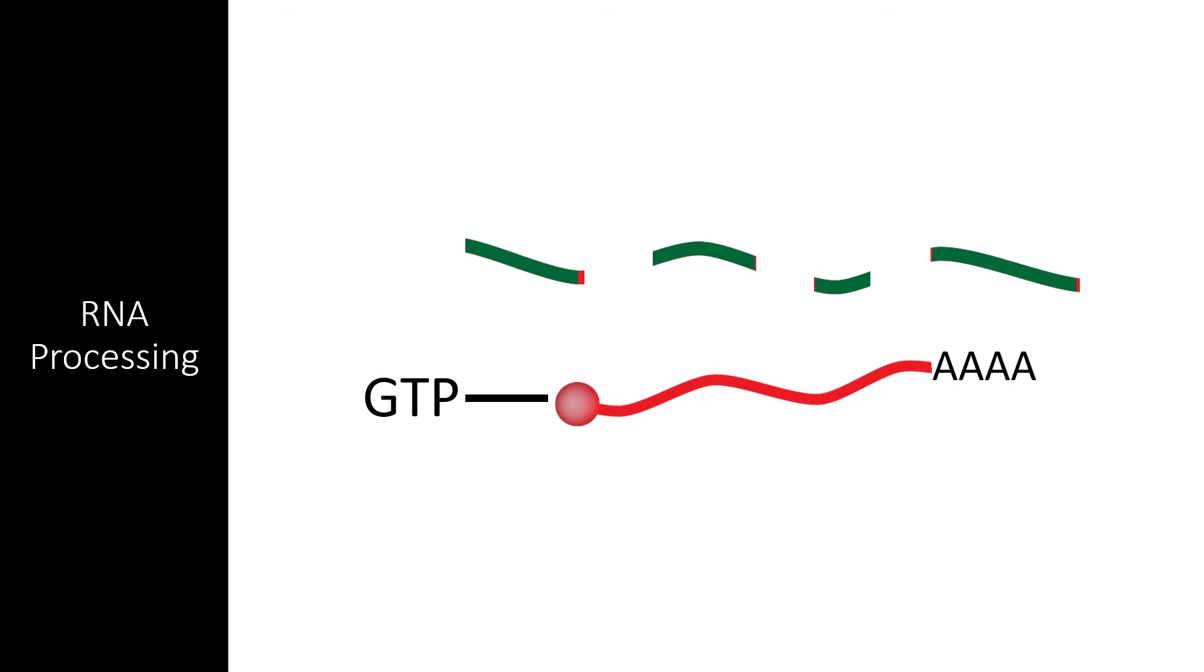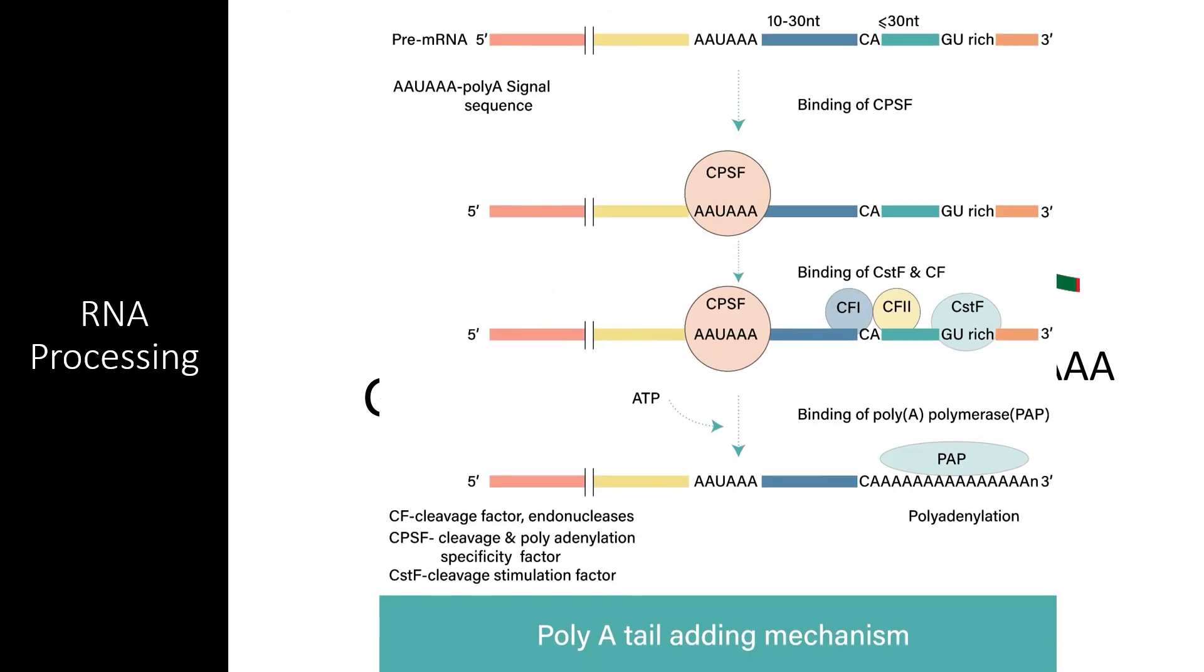On the 3' side of the molecule, a long string of adenine nucleotides is added. Like the GTP molecule, this poly-A tail stabilizes the other side of the pre-mRNA. To do this, a number of proteins recognize specific sequences within the mRNA. These proteins recruit poly-A polymerase, which completes the process of polyadenylation.